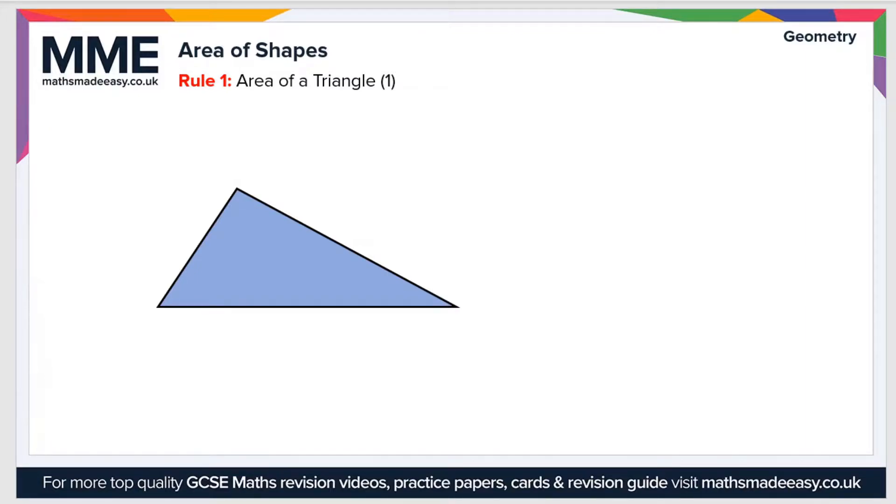If we have this triangle where the width of the base we'll call b and the height of the triangle we'll call h, so b is this length here, then the area of the triangle is half times the base, which is b, times the height, which is h. The units will be in either centimeters squared, meters squared—it really just depends on what the units of b and h are.